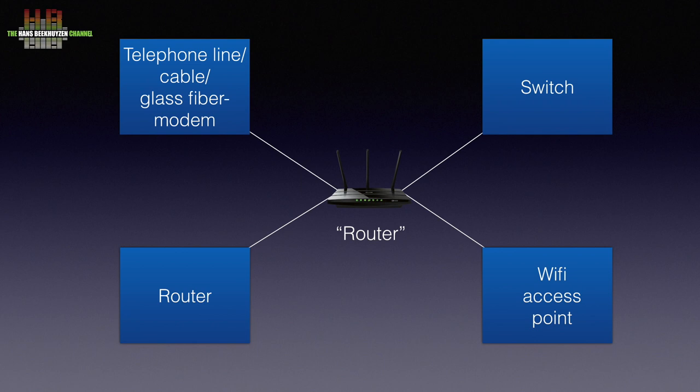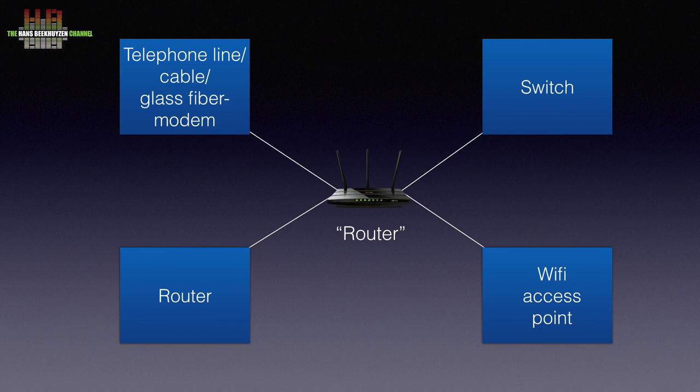A switch in its basic form is just a distribution socket that lets you connect more than one network device to your router. Nowadays switches are smart in that they route signals only to the port the addressed computer is connected to. The WiFi access point essentially is the radio that connects the network to your WiFi devices. If you then know that these routers are built very cheap, you might understand why timing accuracy isn't to high standards.